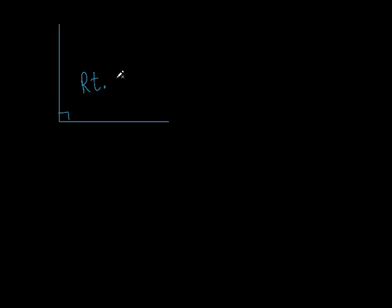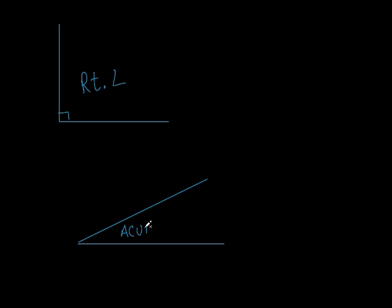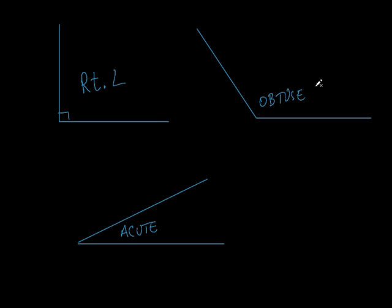There are three types of angles we're going to talk about. If I had an angle that's exactly 90 degrees, that is a right angle — I'll shorthand it as RT angle. A lot of times we do shorthand in geometry. If we had an angle that is less than 90 degrees, we call this an acute angle. And if you had an angle that was more than 90 degrees, we call this an obtuse angle because it's greater than 90 degrees.